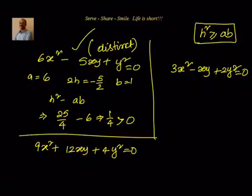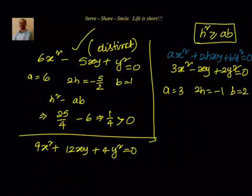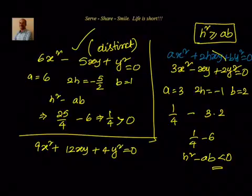Now for 3x² − xy + 2y² = 0. Comparing with ax² + 2hxy + by² = 0, we get A = 3, 2H = −1 so H = −1/2, and B = 2. H² = 1/4, and AB = 3 × 2 = 6. So H² − AB = 1/4 − 6 < 0. Therefore, H² < AB, and these are imaginary lines.